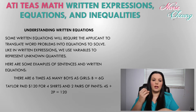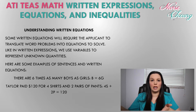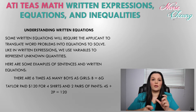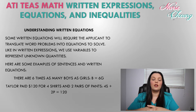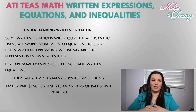Here are some examples. There are six times as many boys as girls, so we know that b equals 6g. Taylor paid $120 for four shirts and two pairs of pants, so the equation is 4s plus 2p is equal to $120. Those are two examples of transforming a sentence into a written equation.